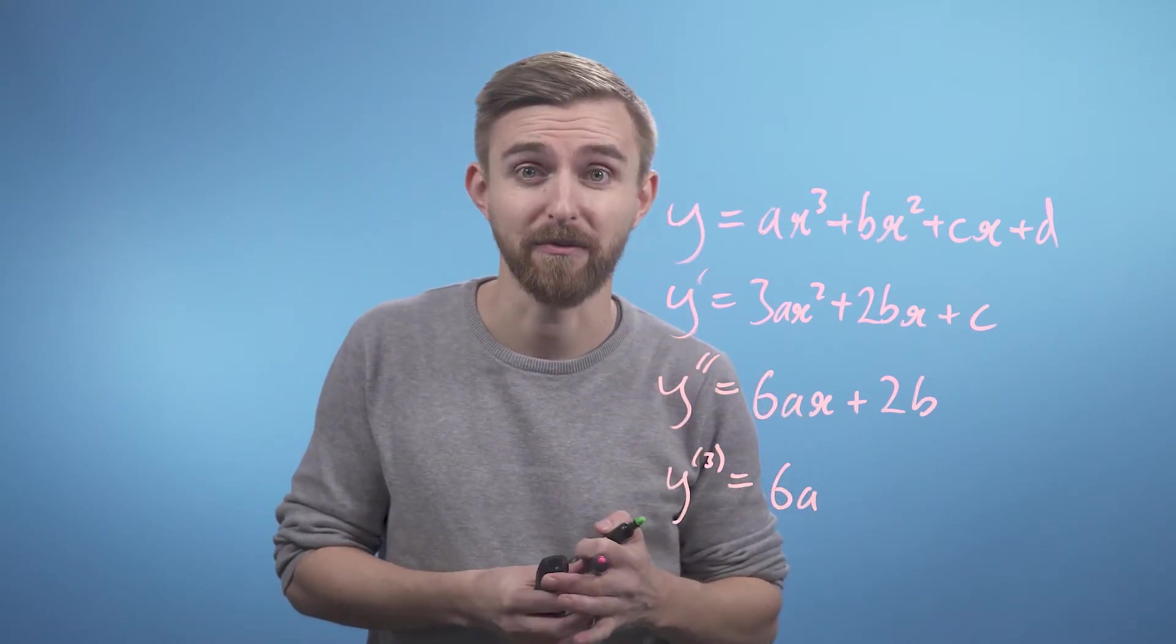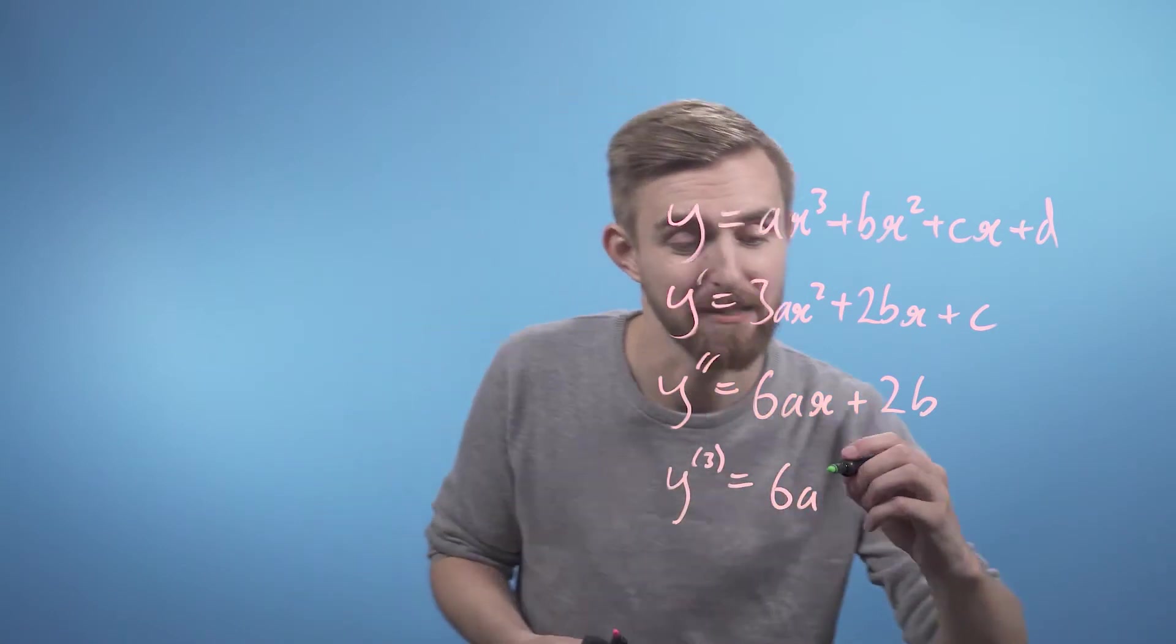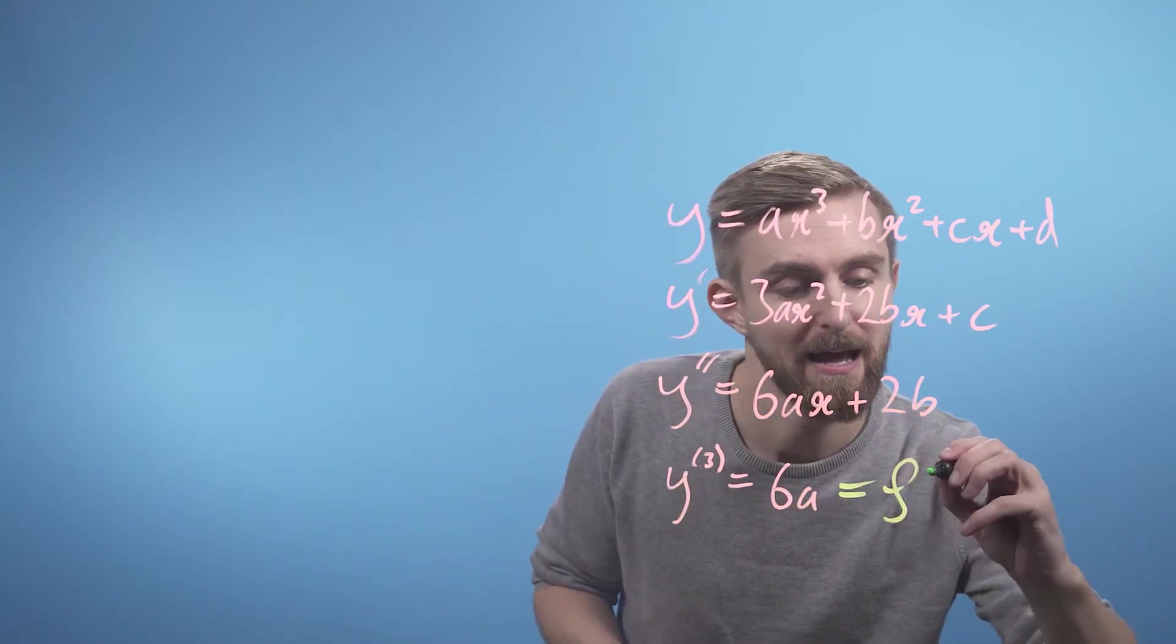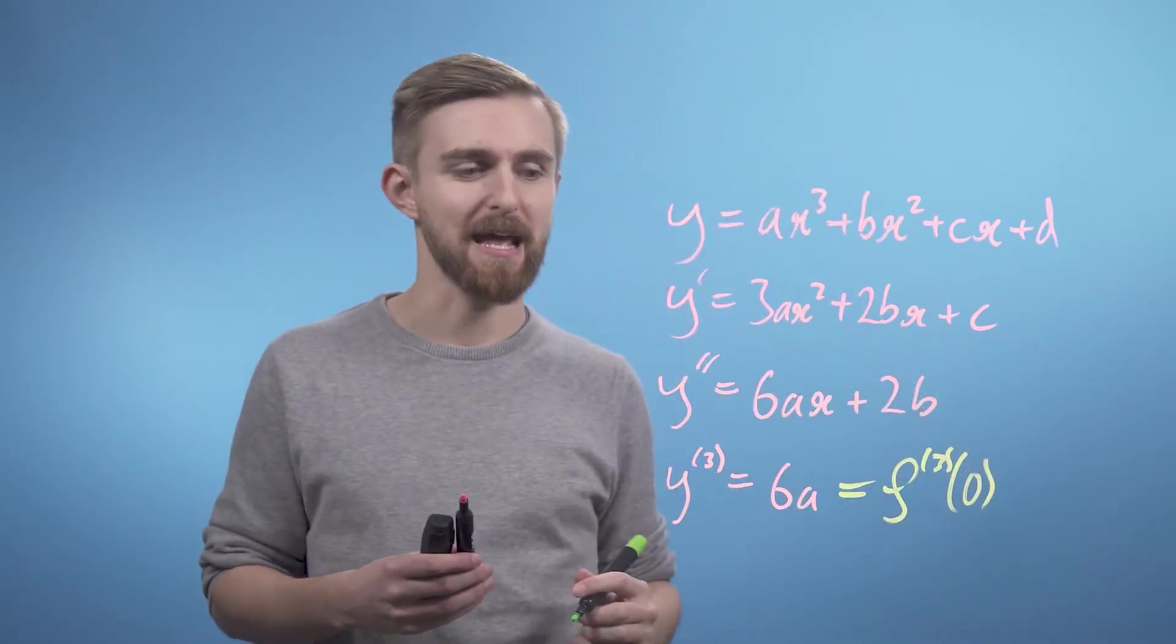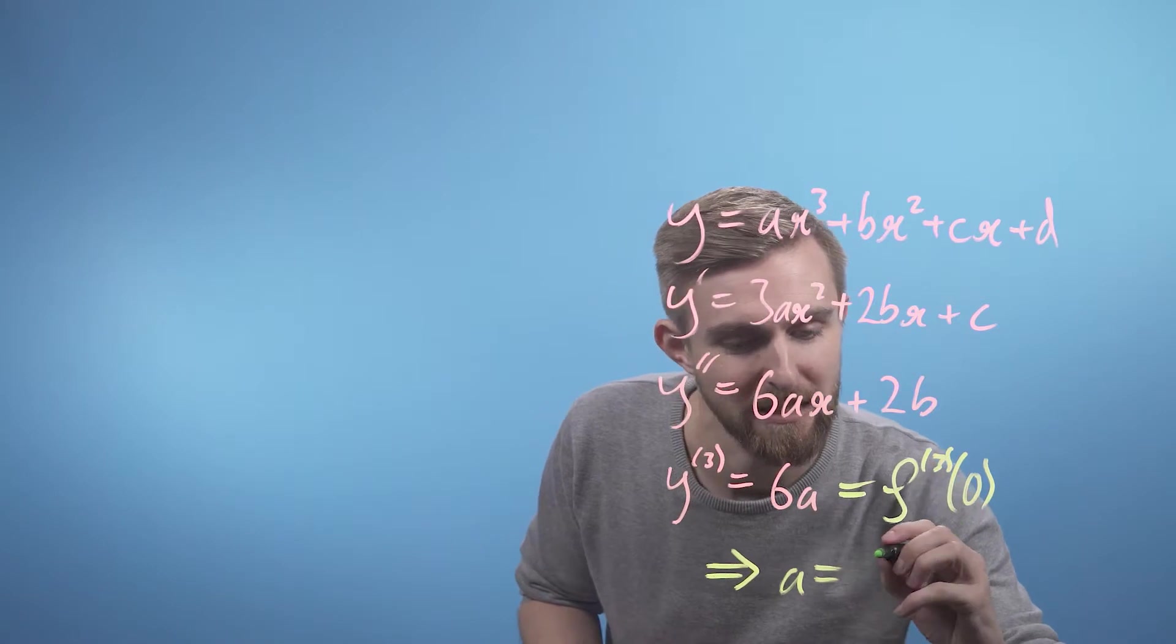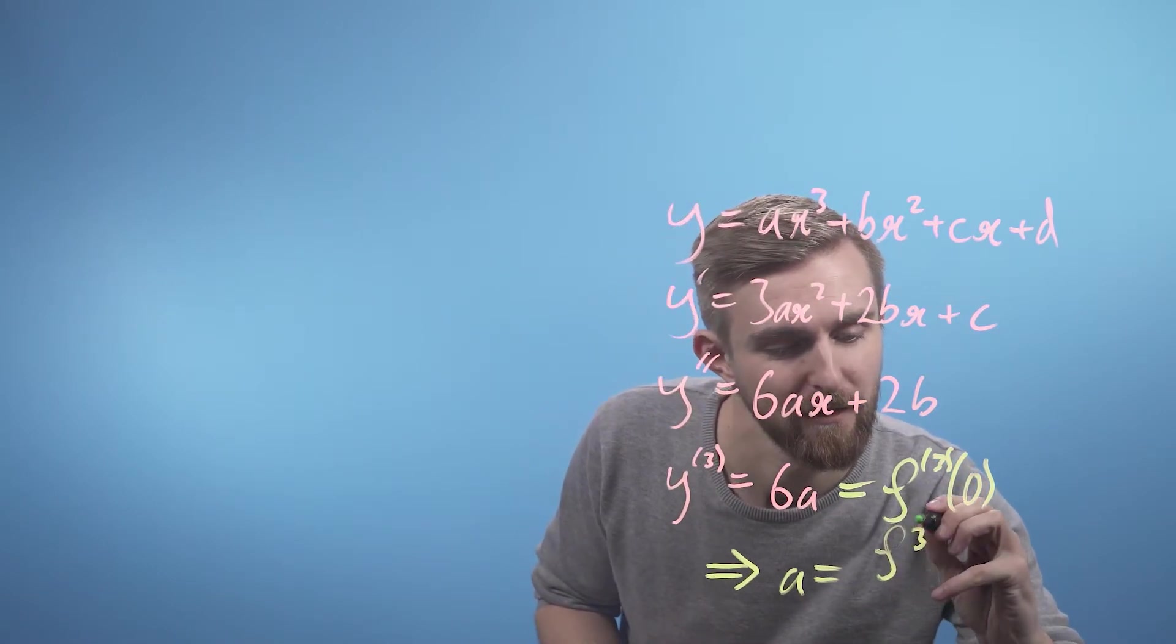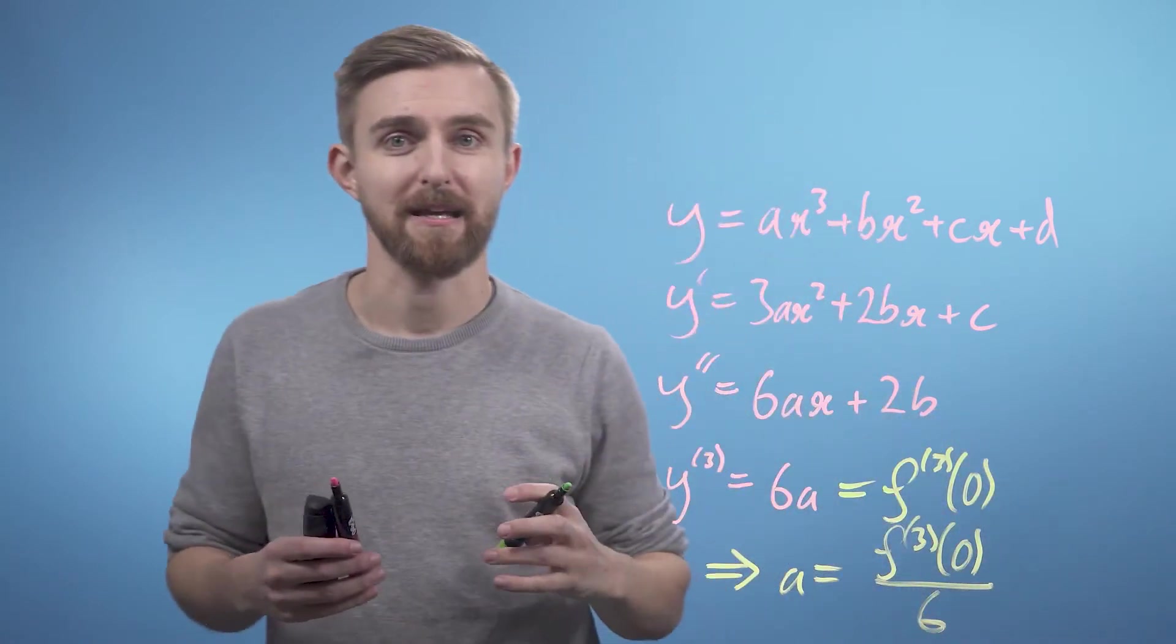So clearly, we want this thing, the third derivative of our approximation function, to equal our function f of x when we've differentiated it three times and evaluated it at the point x equals 0. So we're setting this x to 0. Now there is no x in this bit. We can say f triple prime at 0 equals 6a. Therefore, a just equals f triple prime at 0 divided by 6.